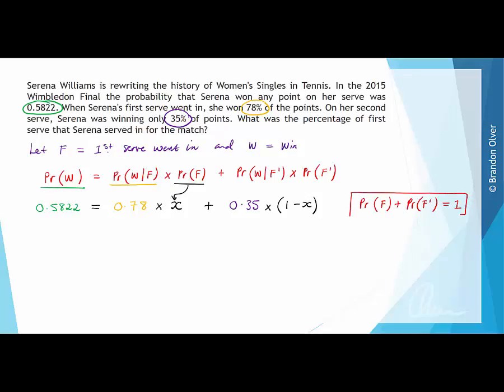So that there is one of our rules of probability that we can apply. So next we can just simplify this. So we find that that's 0.5822 is equal to 0.78X. And then if we expand this, we have plus 0.35, and then we have minus 0.35X. Next we can collect our like terms, so the 0.78X and the minus 0.35X are like terms. So we get 0.5822 is equal to 0.43X plus 0.35.